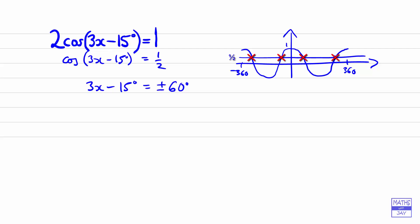So the easiest thing to do here is to say that the angle 3x minus 15 is either 60 degrees or minus 60 degrees. We could also have taken 300 instead of minus 60 there.